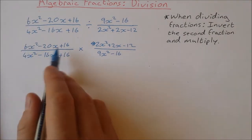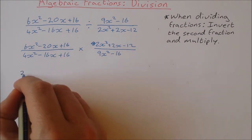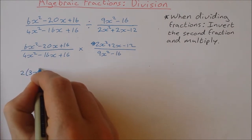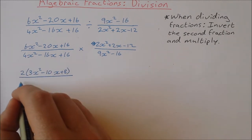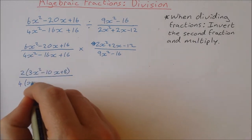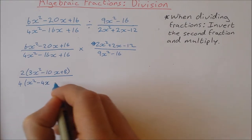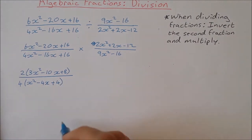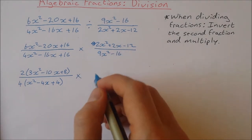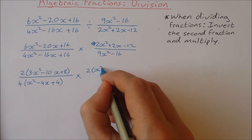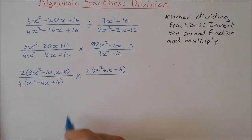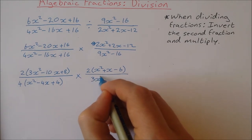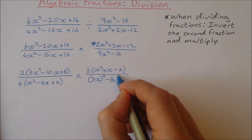On the top line I can factor out 2, leaving me with 3x squared minus 10x plus 8. On the bottom I can factor out 4, leaving x squared minus 4x plus 4. Multiplied by: on the top I can factor out 2, giving 2 times x squared plus x minus 6. On the bottom I'm going to write it as the difference of two squares: 3x squared minus 4 squared.